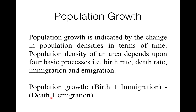Birth rate is generally expressed as the number of births per thousand individuals of a population per year. Mortality or death rate is expressed as the number of deaths per thousand individuals of a population per year. So population growth = birth + immigration − death + emigration.